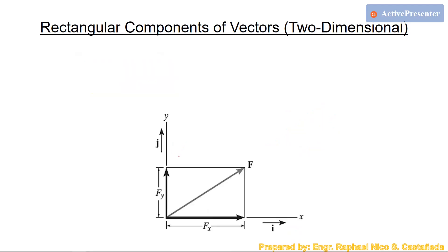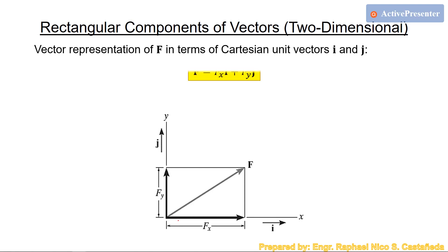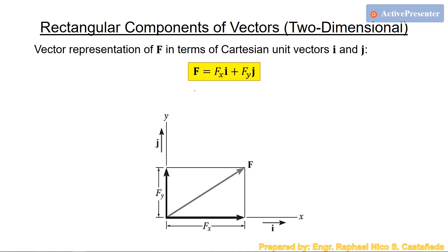Another important concept is expressing vectors in vector notation. A vector F is written as: F = Fx·i + Fy·j, where i is the x-component unit vector and j is the y-component unit vector. Vector notation is essential for operations such as vector addition and vector multiplication, and unit vectors will be discussed further in the three-dimensional Cartesian vectors topic.